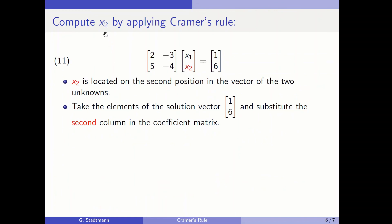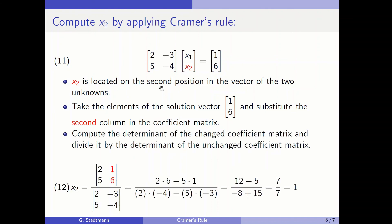Let's have a look at x2. We want to compute x2 by applying Cramer's rule. x2 is located on the second position in the vector of the two unknowns. Therefore Cramer's rule tells you: take the elements of the solution vector and substitute them into the second column of the coefficient matrix because x2 is on the second position. Afterwards, compute the determinant of the changed coefficient matrix and divide it by the determinant of the unchanged coefficient matrix.